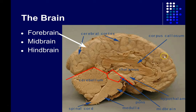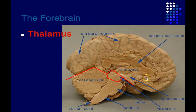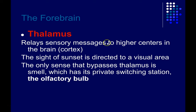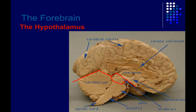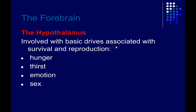The forebrain includes the thalamus, which serves as a relay station for all but one of your sensory inputs — the sight of a sunset is relayed up to visual cortex, auditory information to the auditory parts of cortex in the temporal lobe. The only sense that doesn't go through the thalamus is smell, which has its own private switching station, the olfactory bulb. The hypothalamus, just ventral to the thalamus, is involved with regulating basic drives like hunger, thirst, emotion, and sexual drives.